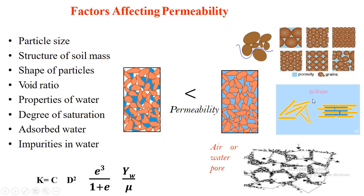The flow of water in a flocculated structure is very low compared to the flow of water in a dispersal structure. The shape of particles — whether square, rectangular, angular, sub-angular, or irregular — also affects permeability. Based on the shape of the particles present in the soil mass, the flow of water will be influenced accordingly.